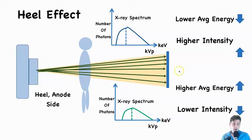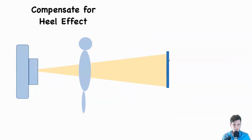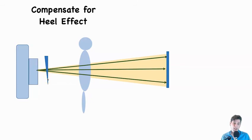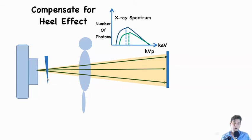The lower intensity on the heel side is particularly important because it directly affects image noise. We can illustrate this with more arrows on the non-heel side to indicate higher intensity. To compensate using a physical filter: since beam hardening depends on the amount of material x-rays pass through, if the anode is below, use a wedge-shaped filter with more filter material on the non-anode side and less on the anode side, equalizing filtration across both sides.